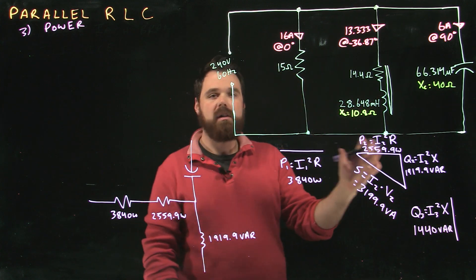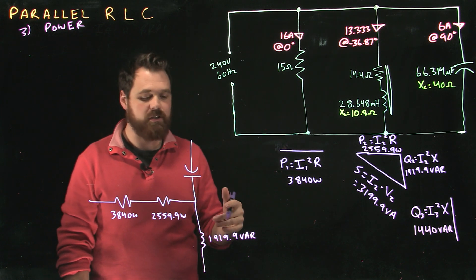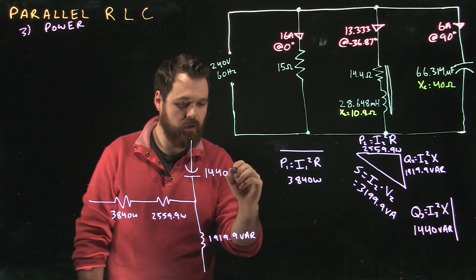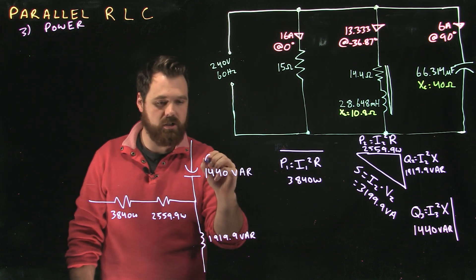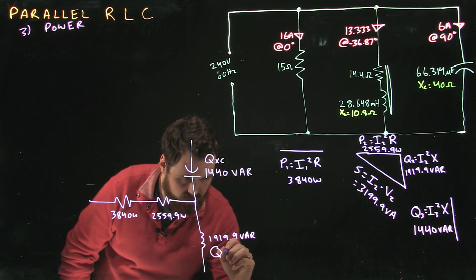Now I know the capacitive reactive Vars and the inductive reactive Vars are occurring 180 degrees out of phase. So that goes up here, 1440 VAR. So if we wanted, we could call this QXC, and we can call this QXL.